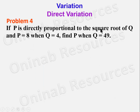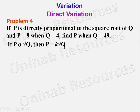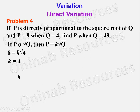Problem 4: if P is directly proportional to the square root of Q and P is equal to 8 when Q is equal to 4, find P when Q is equal to 49. This means P is equal to K root Q, where K is the constant. When P is 8, we have 8 equal to K root 4, which is 2K. Dividing both sides by 2, K is equal to 4. The formula is P equal to 4 root Q.